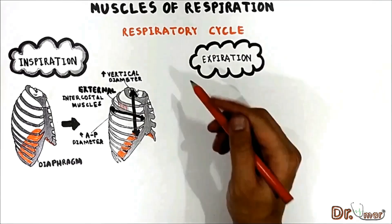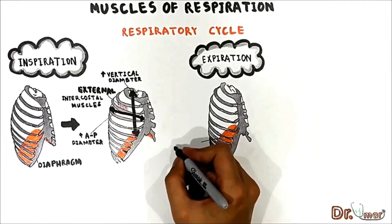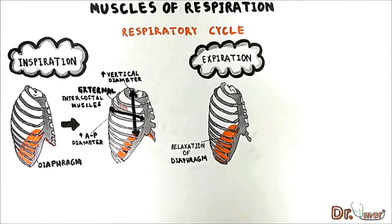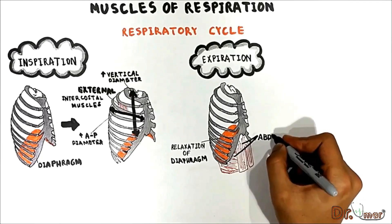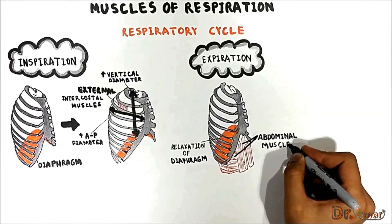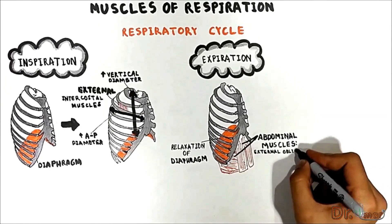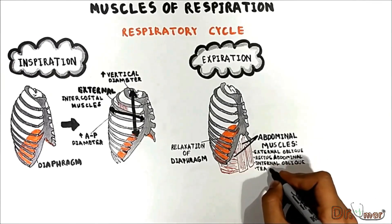Under resting conditions, expiration is normally a passive process. It is due to the relaxation of the muscles of inspiration and the elastic recoil of the lungs — it doesn't require muscle contraction. Active expiration and coughing is produced by the contraction of the abdominal muscles, which compresses the chest wall down and forces the diaphragm up into the chest. These include the external oblique, rectus abdominus, internal oblique, and transverse abdominal muscles.